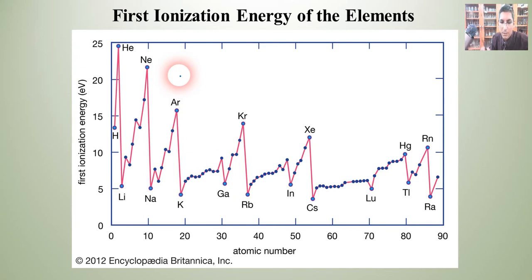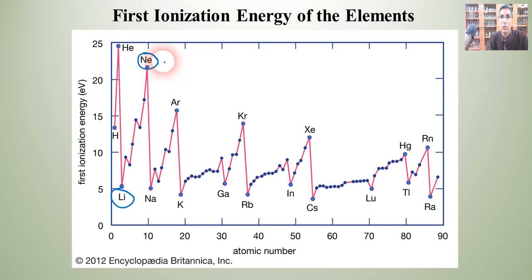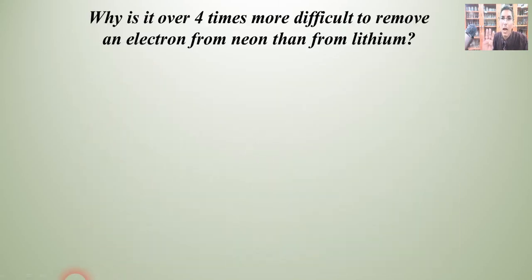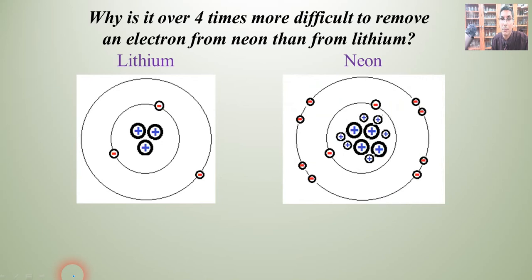I'd like you to notice a couple of elements specifically. We have lithium and neon — these two atoms both have two energy levels. But notice the difference in their first ionization energy: lithium is somewhere around five electron volts, whereas neon is well over 20 — about 22 electron volts. So my question is: why is it over four times more difficult to remove an electron from neon than from lithium? Here are diagrams of lithium and neon — not drawn to scale — and they have the same number of energy levels.